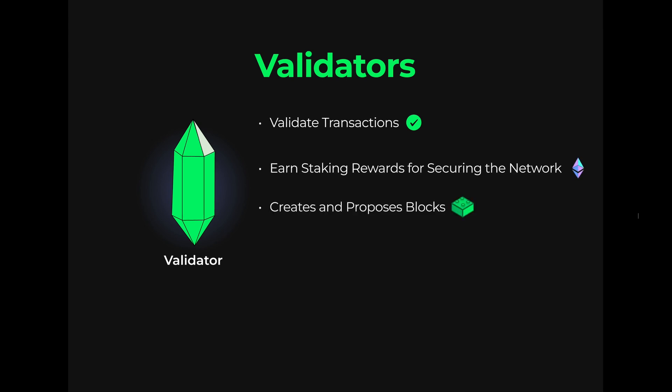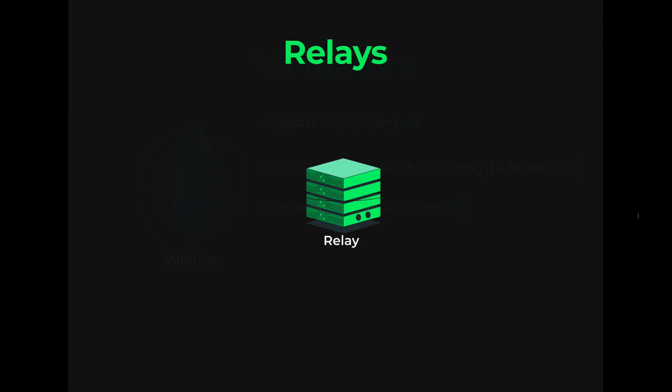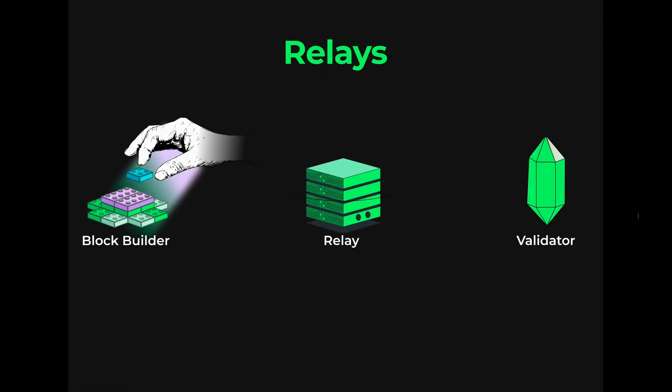Validators propose blocks to the blockchain. A relay can be thought of as a middleman between block builders and validators to ensure that they don't cheat one another. Relays create a marketplace for validators to outsource block building and sell block space to the highest bidder. The block bundle with the highest tip to the validator gets chosen.